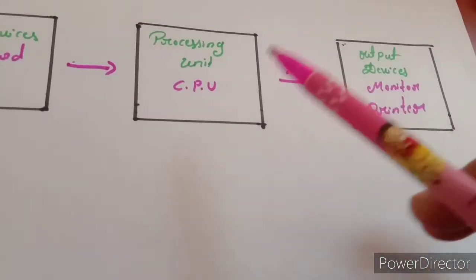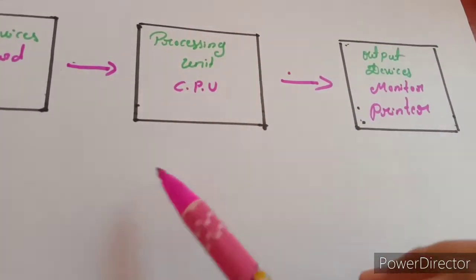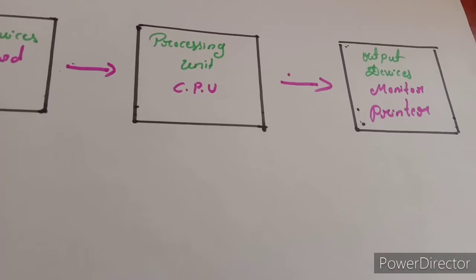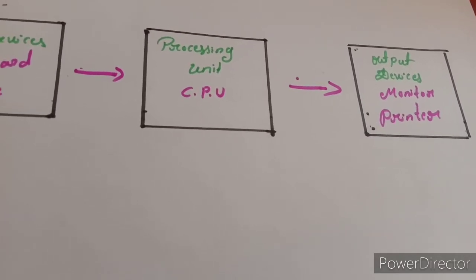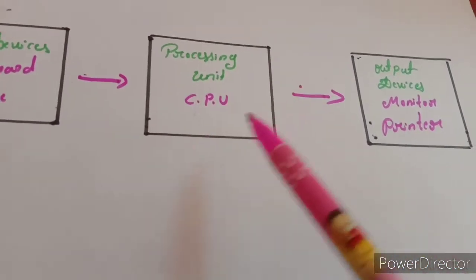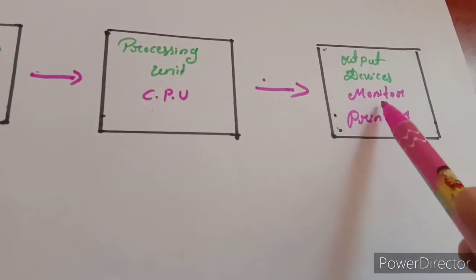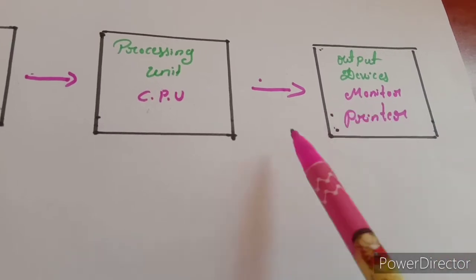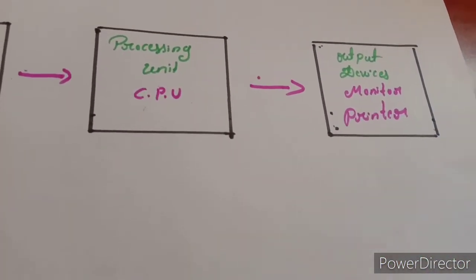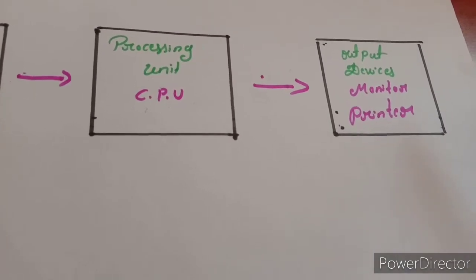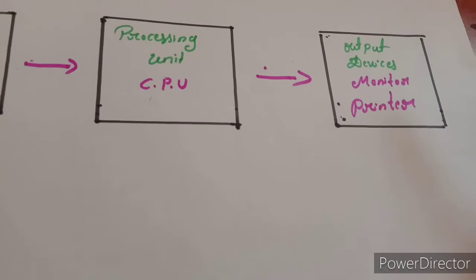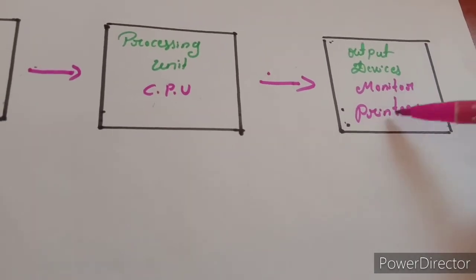The CPU also stores processed data which you can retrieve whenever you want. Thus, the CPU processes and stores data, programs, and information. The output devices are monitor and printer. The monitor displays the information generated by the CPU. You can print the output with the help of a printer. Hence, the monitor and printer are output devices.